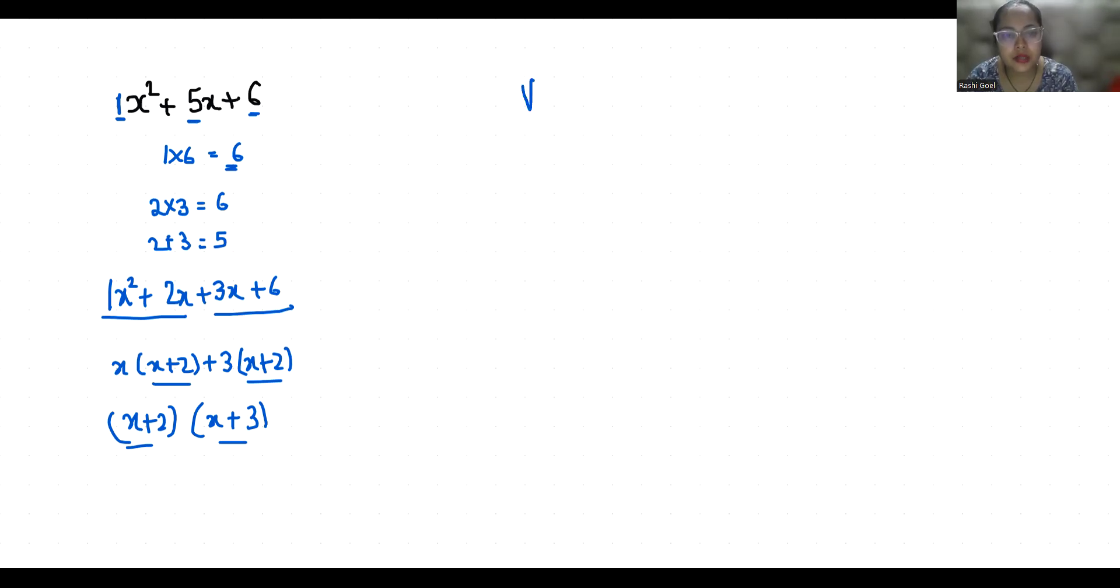First, x plus 2, I am considering this as equals to 0, so the value of x is minus 2. Put it in the equation x square plus 5x plus 6: minus 2 square plus 5 times minus 2 plus 6, so 4 minus 10 plus 6, minus 6 plus 6. Yes, this gives us 0, that is verified.